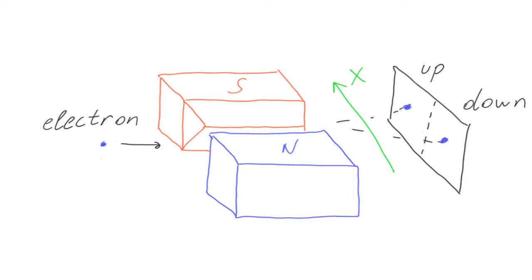Spin has nothing to do with the rotation or even an electric charge. Electrically neutral particles such as neutrons also have spin. Spin is an intrinsic property of a particle. The results of spin measurements can be encoded by a classical bit. Zero is spin down, one is spin up. But spin itself can only be described by a quantum bit, qubit.